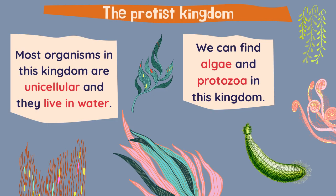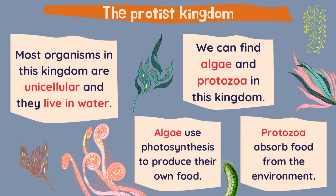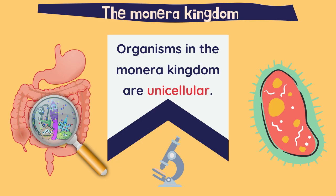The protist kingdom. Most organisms in this kingdom are unicellular and they live in water. We can find in this kingdom algae and protozoa. Algae use photosynthesis to produce their own food and protozoa absorb food from the environment.